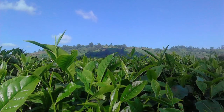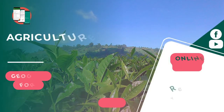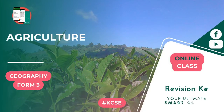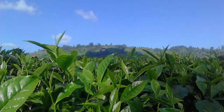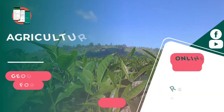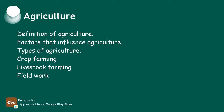Agriculture is the practice of cultivating crops and rearing animals. Having defined that, we should be able to discuss the factors that influence agriculture and explain the types of agriculture.